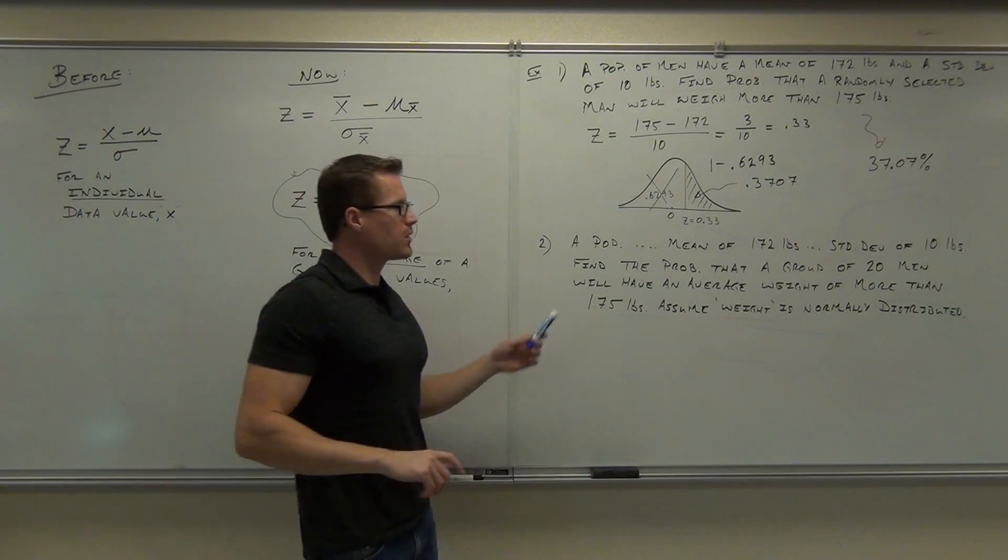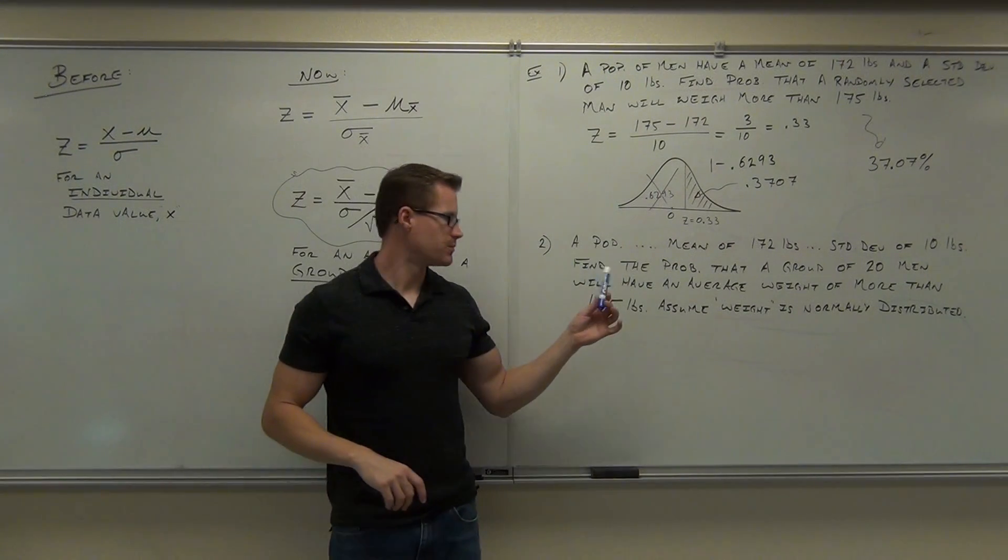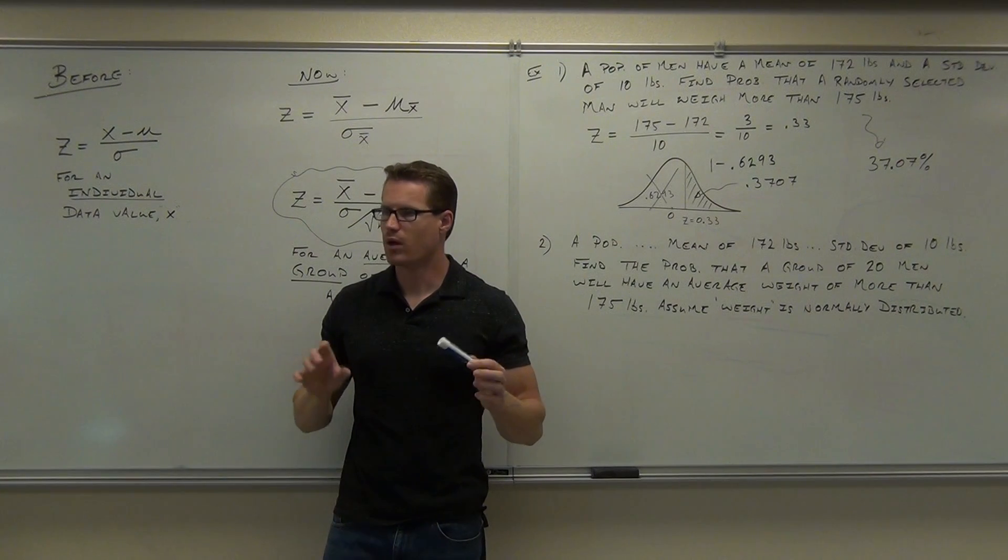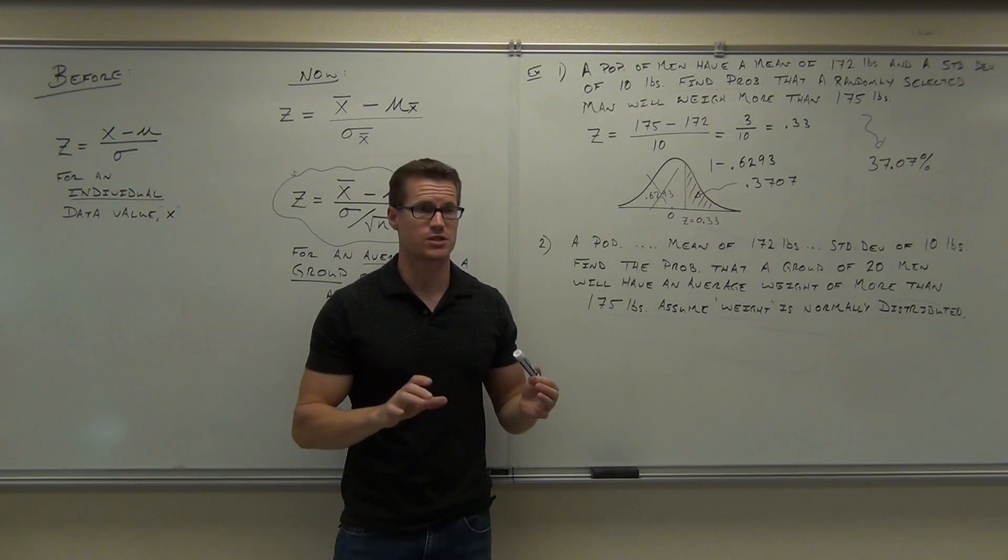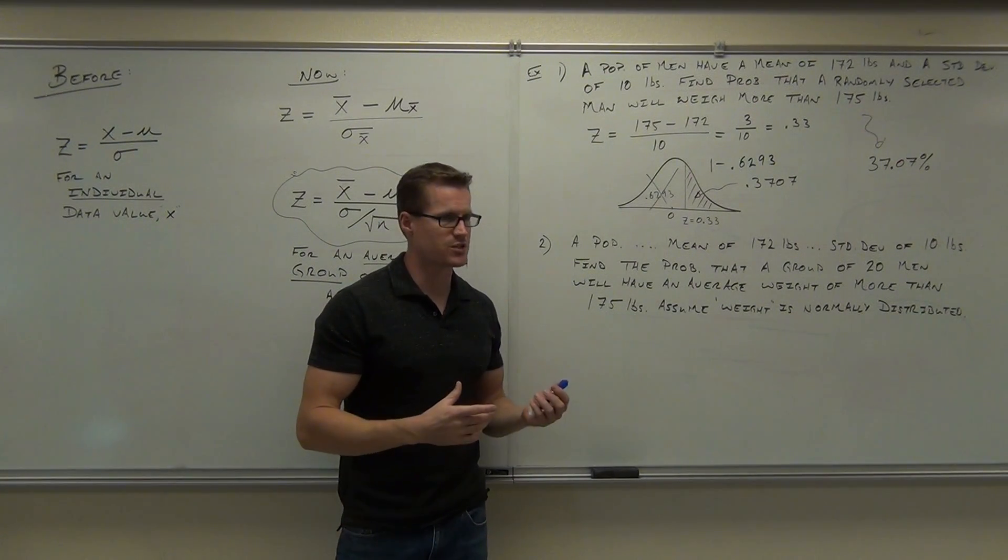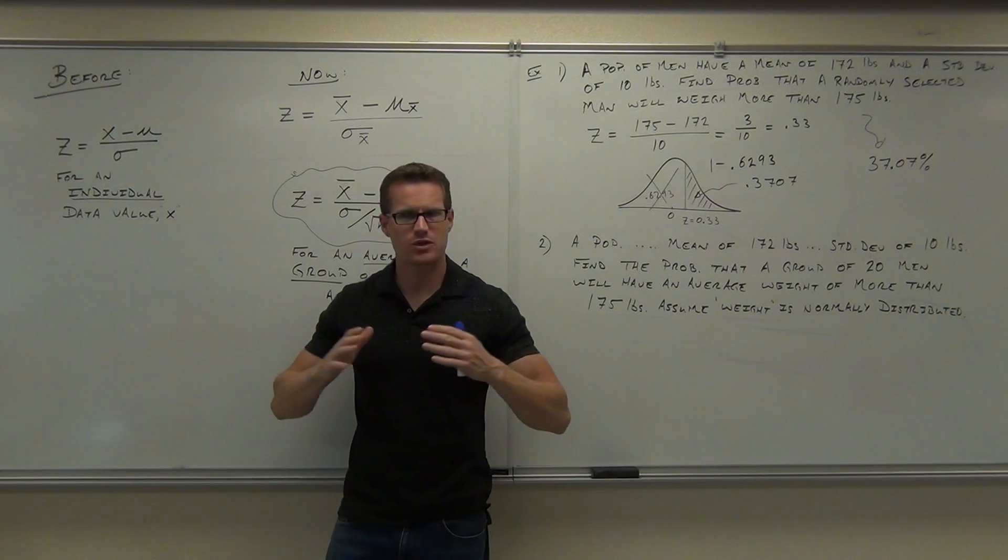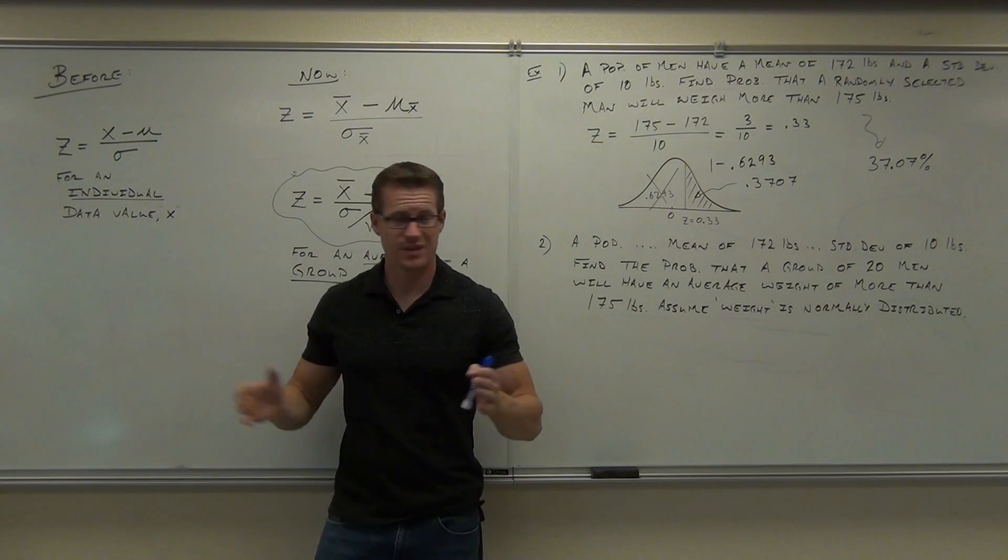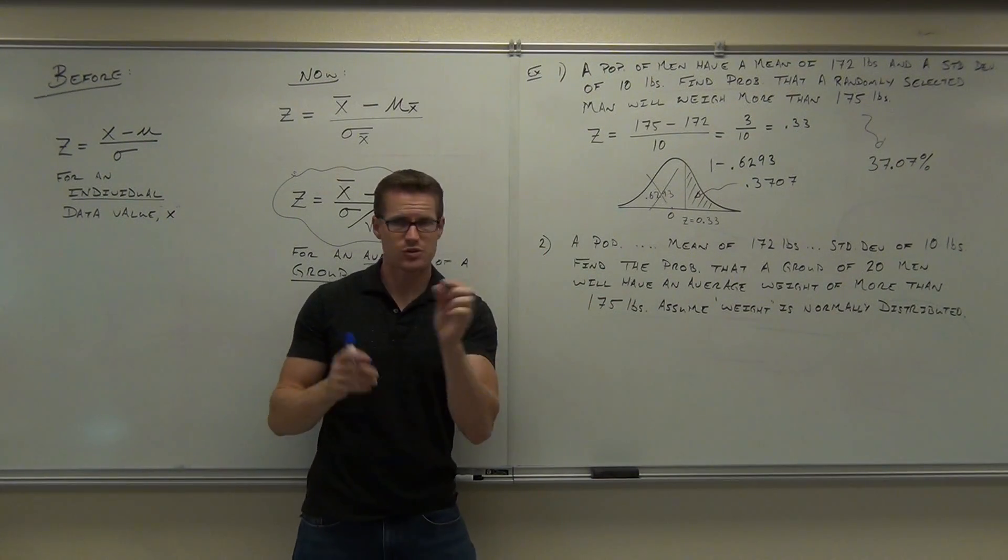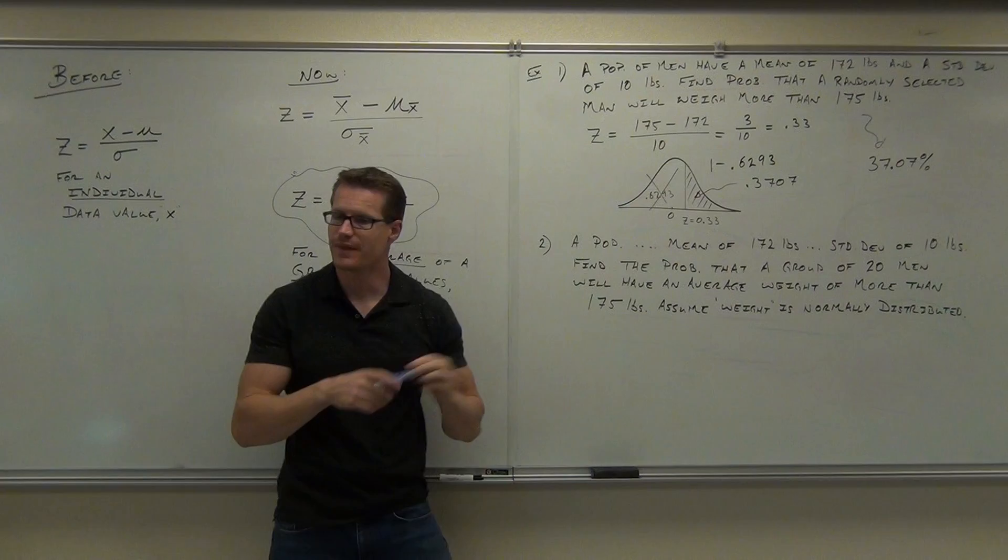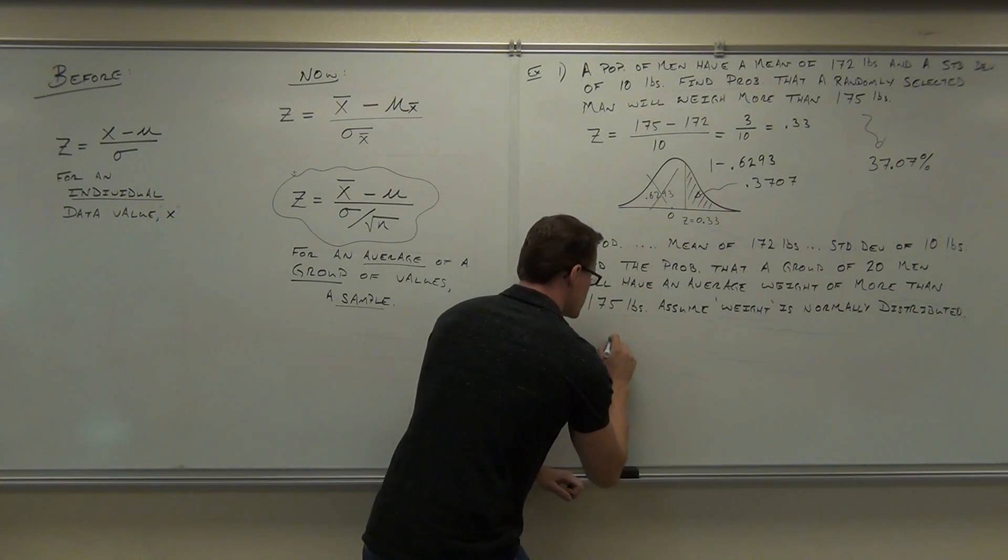So this answer is 37.07%. Now, we're going to do one thing with this, and then we'll finish this up at a later time. I want to find the z-score and look at the differences here. You're going to now see the difference between dealing with a group and an individual.